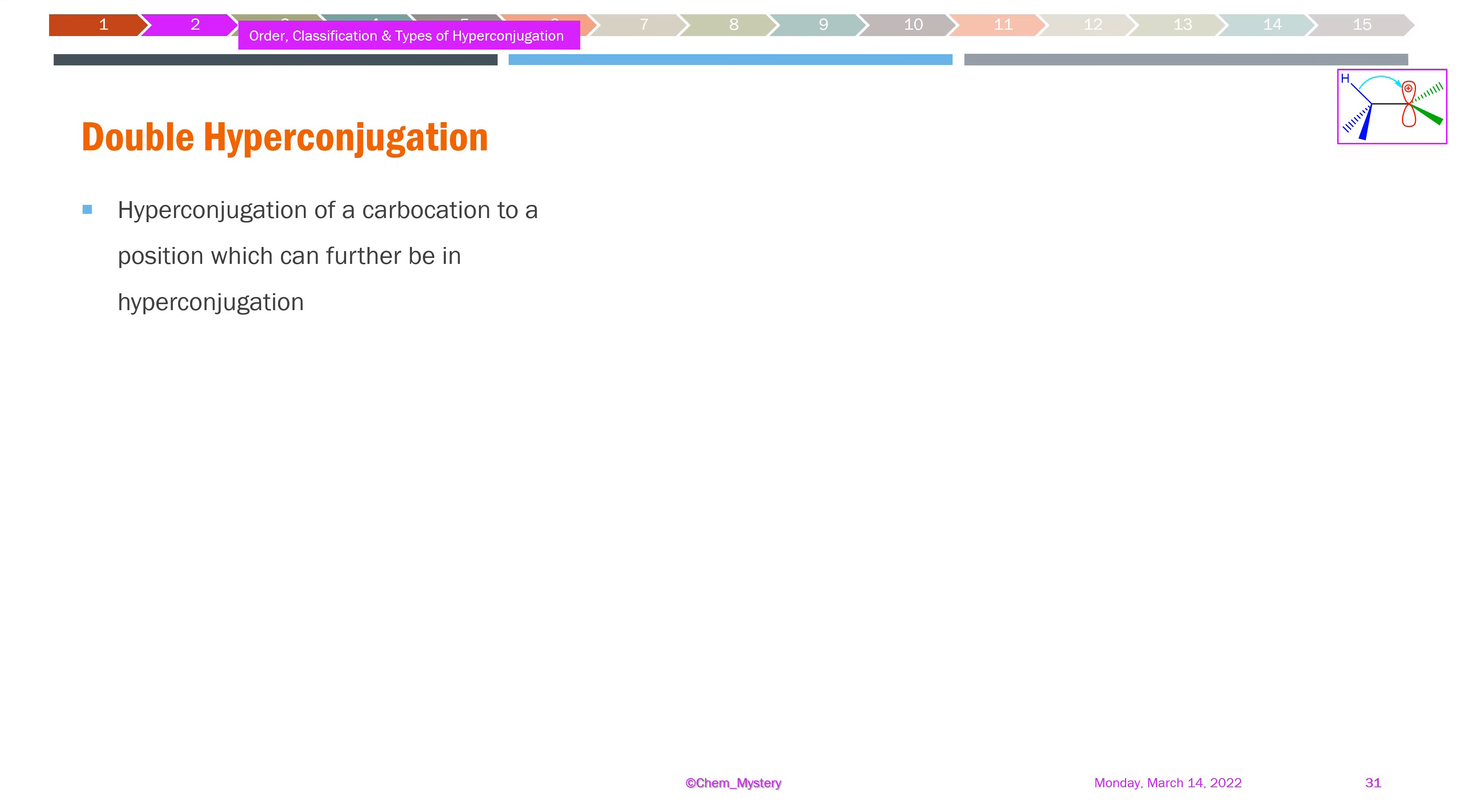Double hyperconjugation, as the name suggests, involves twice the hyperconjugation possible in the same molecule.